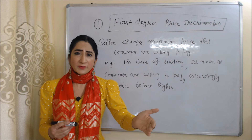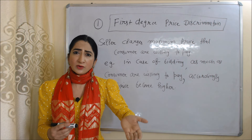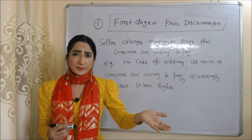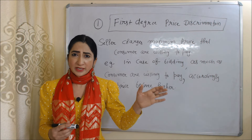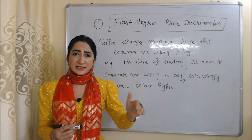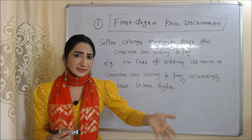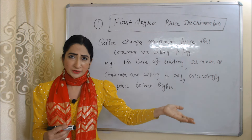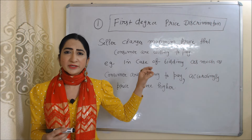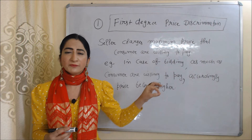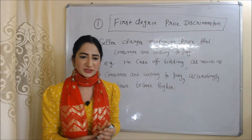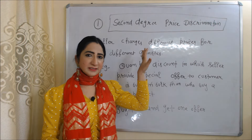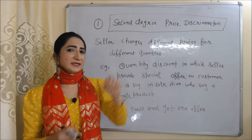For example, in the case of bidding, as much as the consumer is willing to pay, the product price becomes higher accordingly. So here you can see the seller is charging maximum prices based on what the customer is willing to pay.